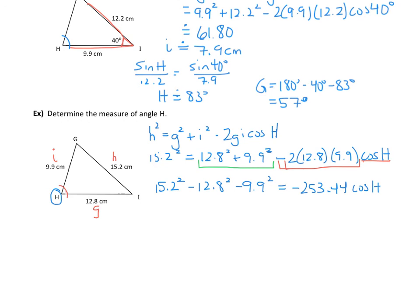Now I'll calculate the left side: 15.2 squared minus 12.8 squared minus 9.9 squared gives negative 30.81. So negative 30.81 equals negative 253.44 times cosine of angle H.